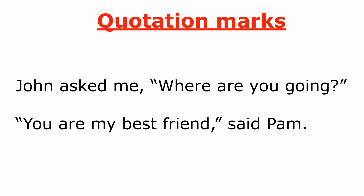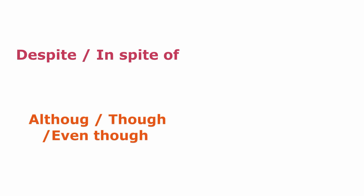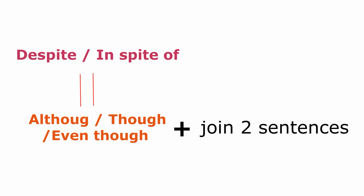Look and remember how we place commas with quotation marks. You should also place commas while using 'despite' or 'in spite of.' They are actually synonyms of 'although,' 'though,' and 'even though.' While 'although,' 'though,' and 'even though' must join two sentences, after 'despite' and 'in spite of' we can use a simple noun or gerund.